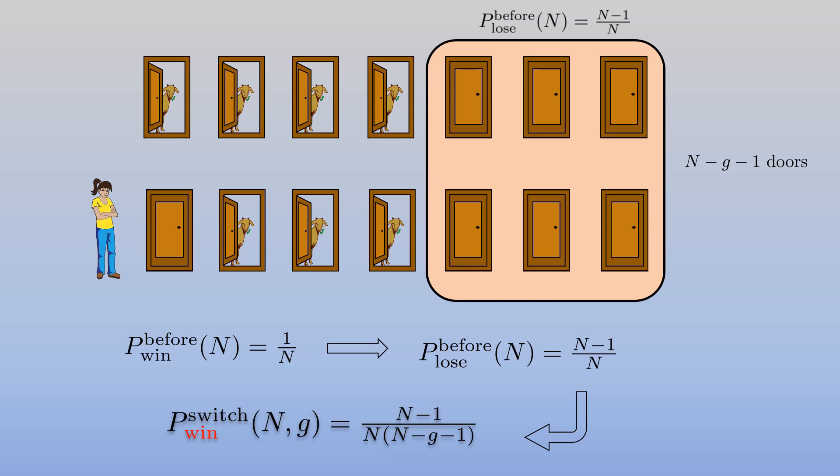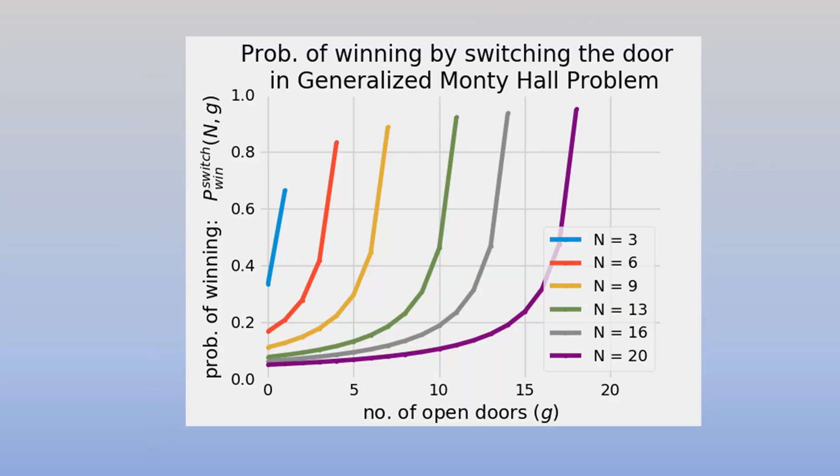To have a better insight into the relation between N and G and the chance of winning the car, we depict this equation for different values of N and G. Here the horizontal axis is G, the number of doors that the host reveals, and the vertical axis is the chance or probability of winning. Each curve represents a different N or a different total number of doors. We have N from 3 to 20. G equals to zero means that none of the goats are revealed, and the probability of winning in this case shows the probability of winning without changing the door, or actually the probability of winning of the first choice.